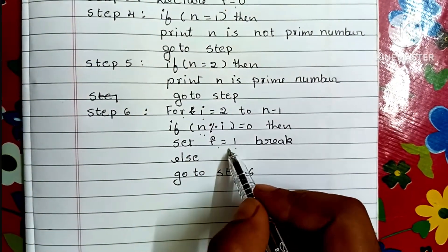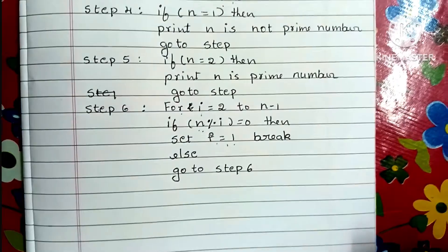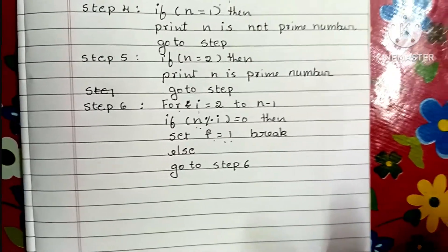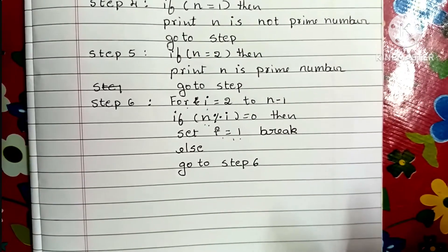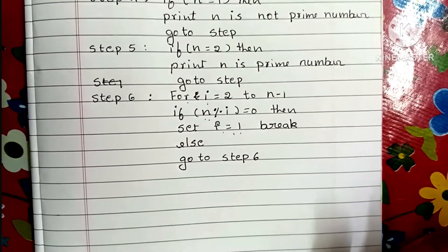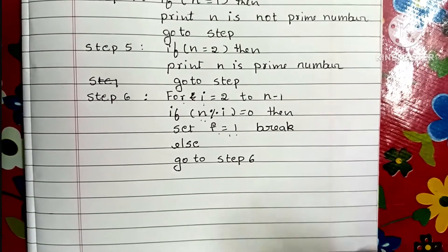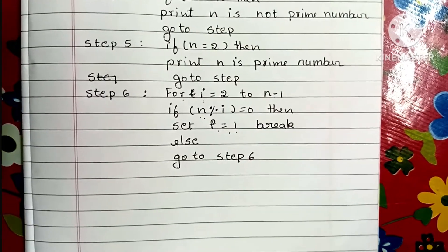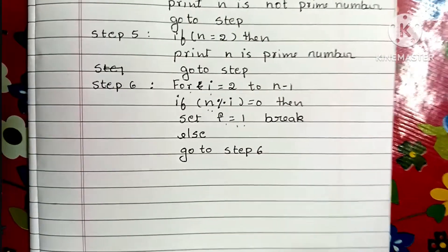If F is equal to 1, we know the given number is not a prime number, so we directly print: N is not a prime number.